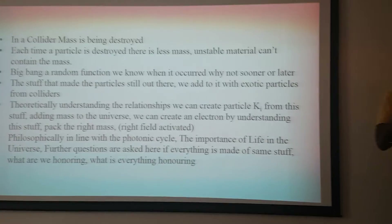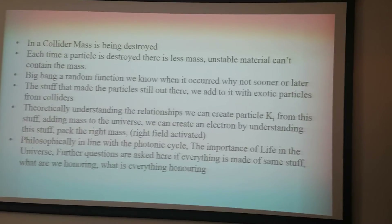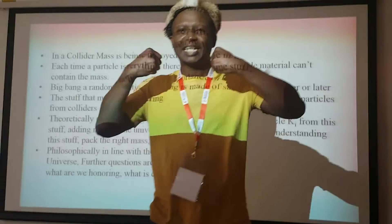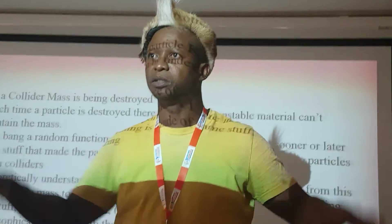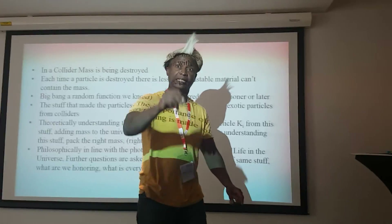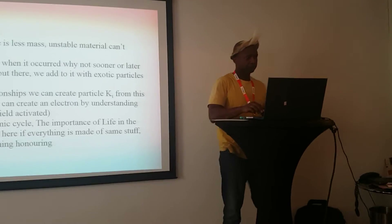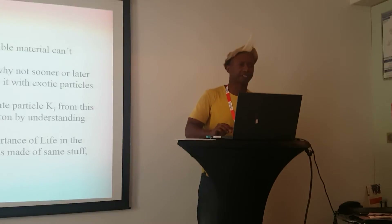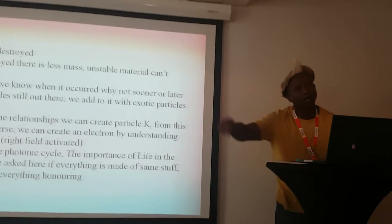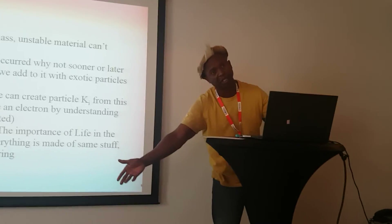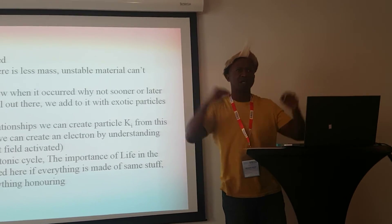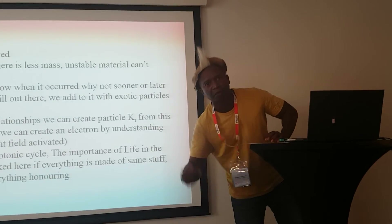In a collider, mass is being destroyed. Each time a particle is destroyed, there is less mass in the universe — every time neutrons smash each other in a collider, there is less mass in the universe, because we have destroyed mass and you are seeing it with your own eyes. The Big Bang is a random function — we know when it occurred, but why did it occur at that specific time? They say 11 billion years ago, last week it was 14 billion years ago. So it is a random event, the Big Bang.